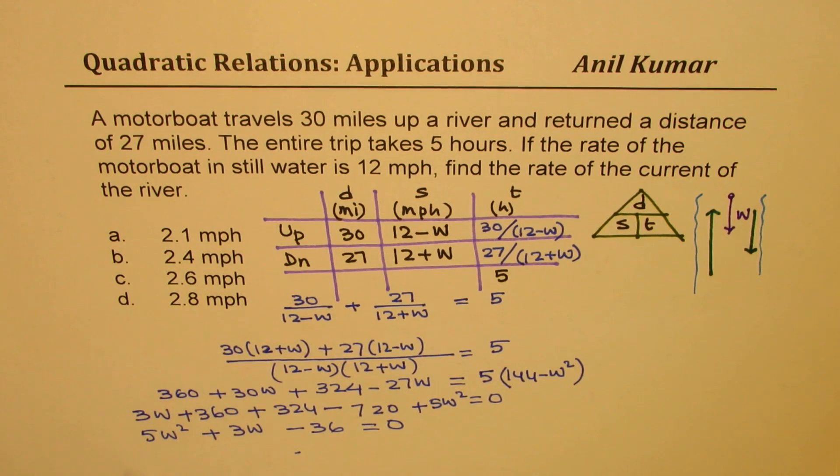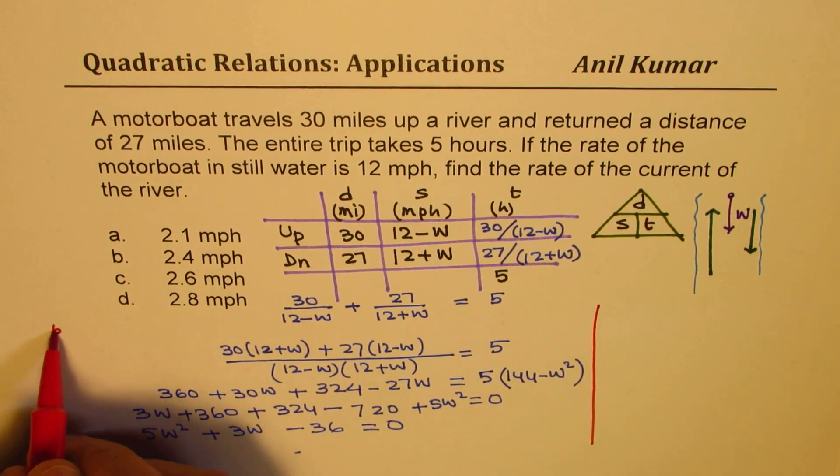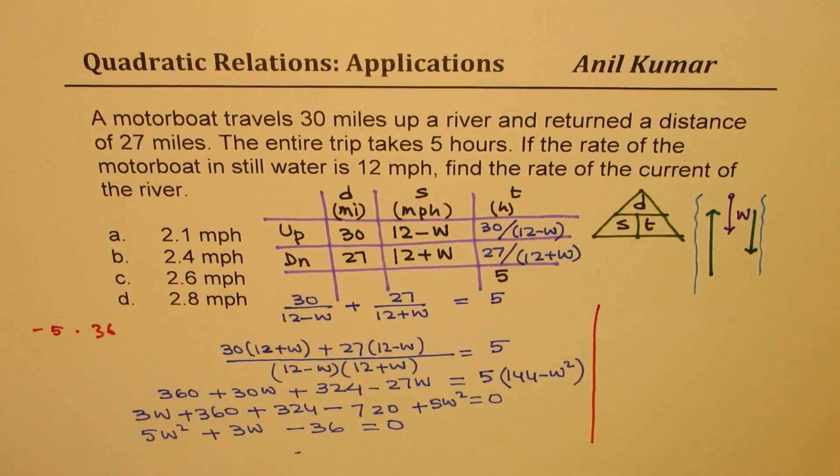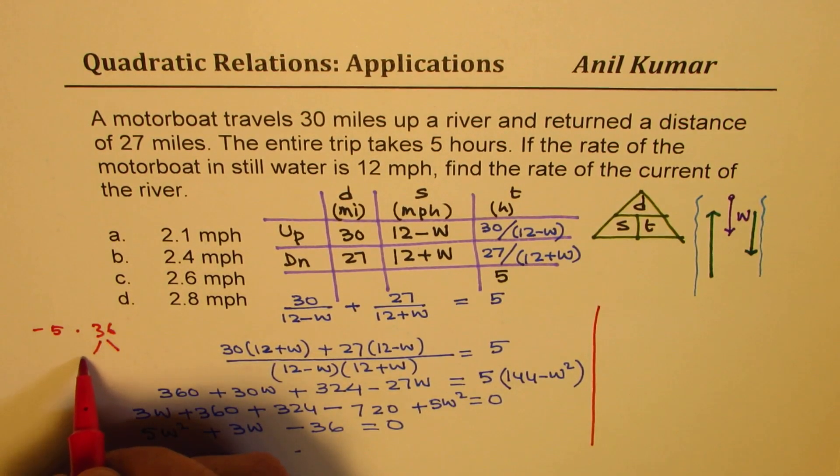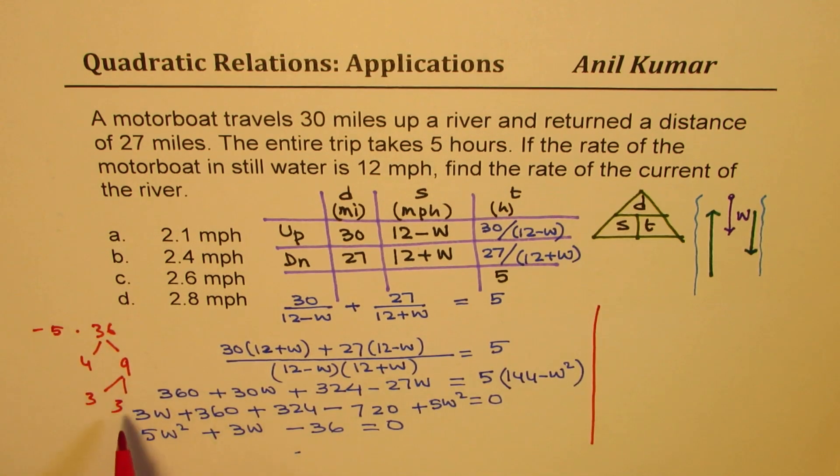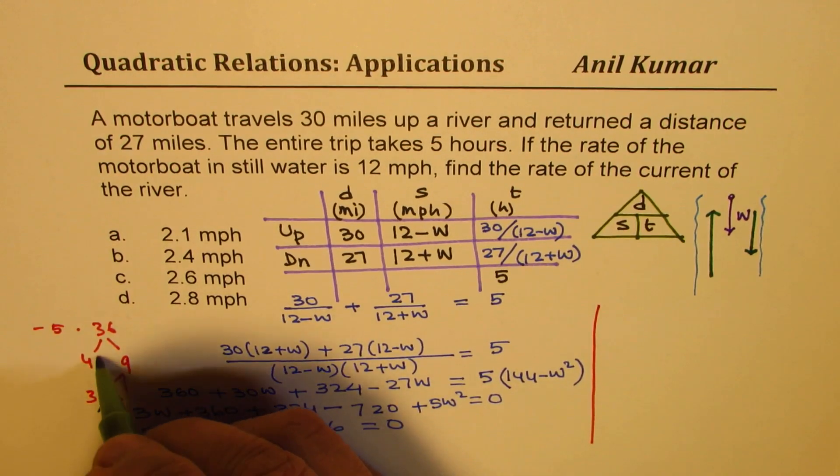Now we need to factor this. So we can do sum and product to factor this. So let's try sum and product. So we need product of 5 times 36, that is negative number. We need positive big number. Well, 36 could be written as 4 times 9, for example, and 9 could be written as 3 times 3. Now we need to form a combination so that we could get plus 3. So 12 and 15 can work for us. Do you see how I get it? So this is 12, and the other number is 15.